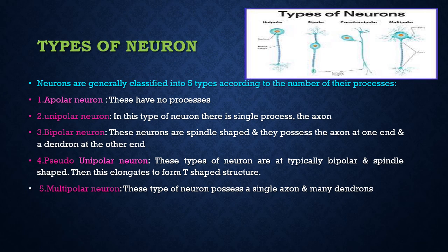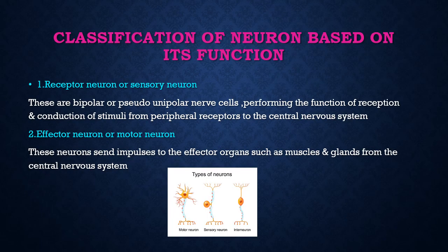Last type is multipolar neuron, which means it has a single Axon and many dendrons. These are all the classifications of neuron based on the process. Next we move on to classification of neuron based on its function. It is divided into three types. First one is receptor neuron or sensory neuron — this type of neuron conducts impulse from the peripheral receptor to the central nervous system.